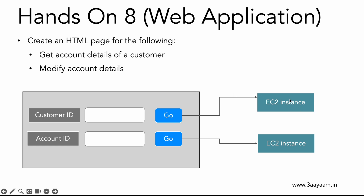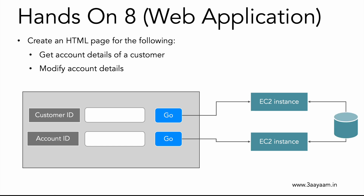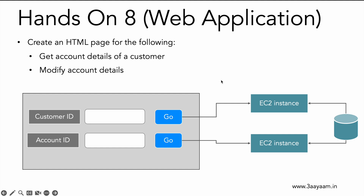To get account details of a customer, there will be an EC2 instance. Similarly, there will be another button — we'll put the account ID here, and whenever we press the Go button it will go to the EC2 instance. The EC2 instance will get the information from the Aurora database. This is the first time I'm talking about a web application; so far we have been using only Postman to send API requests to the EC2 instances or to a local machine.